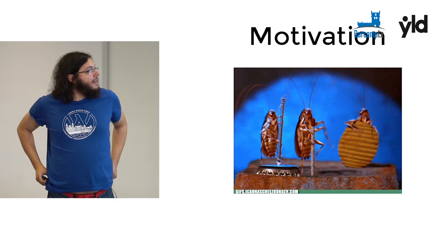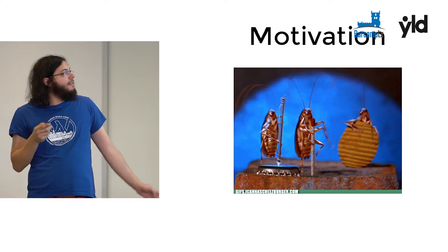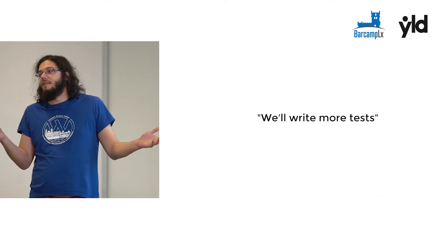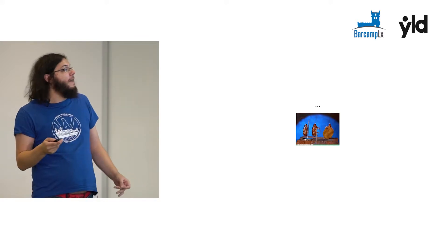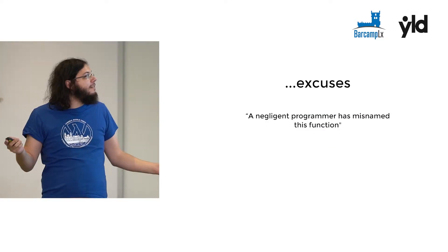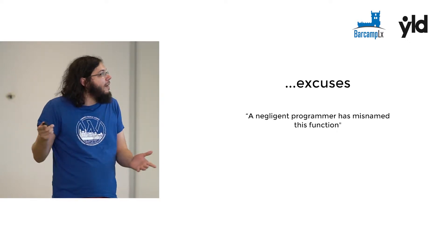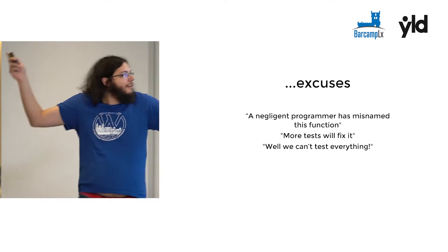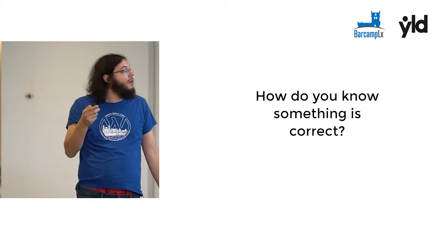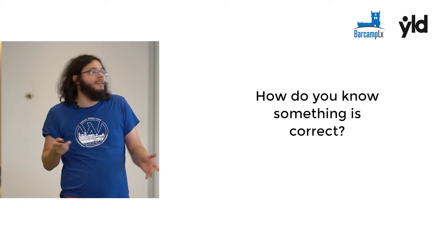The motivation for the types I'm going to talk about is bugs — because sometimes bugs appear in production and then what do you do? Well, we fix the bug and write more tests so at least this bug doesn't happen next time. But then bugs happen again in production for something else we didn't test, and then we start making excuses like someone gave a dumb name to a function, or 'more tests will fix everything', or 'we can't test everything, what do you want me to do?'